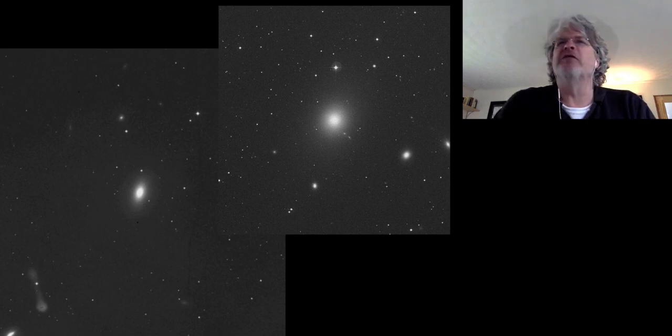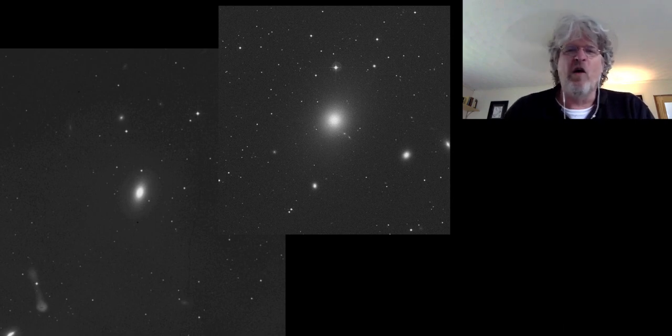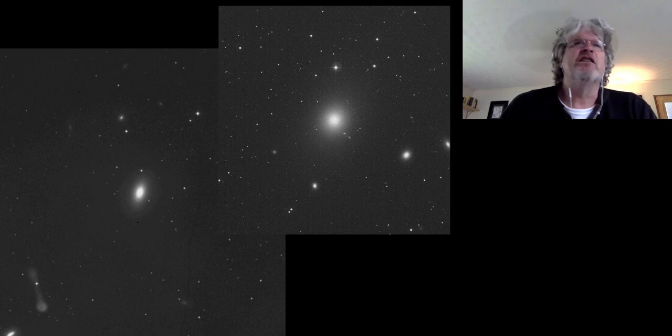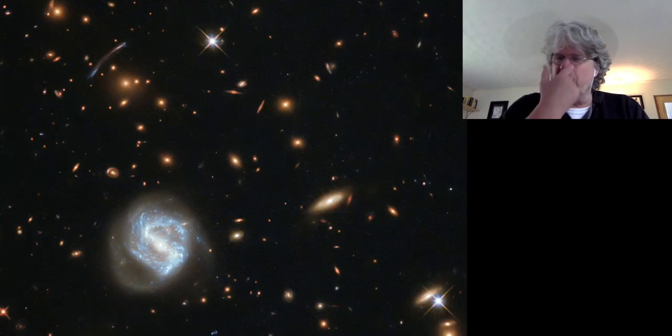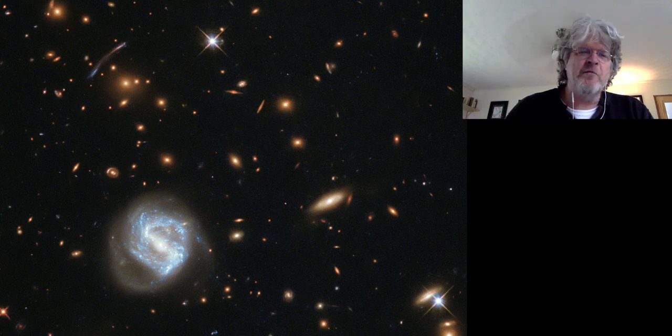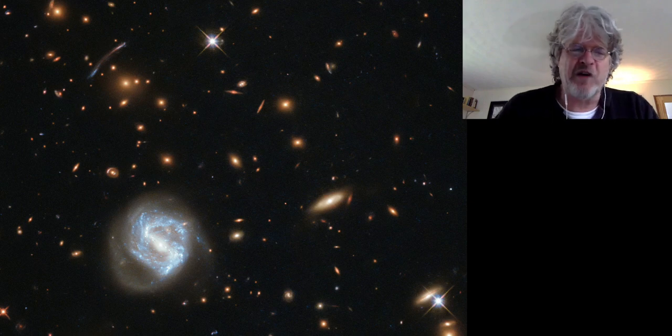Some of these nebulas, some of these fuzzballs have a spiral shape like this. Some of the other fuzzballs are just indistinct fuzzy things, circular or elliptical, but they don't really have any discernible structure associated with them.